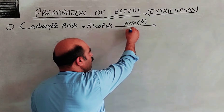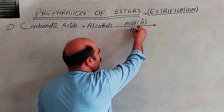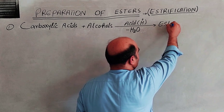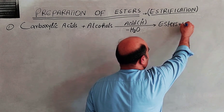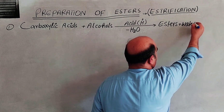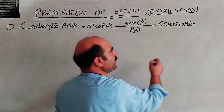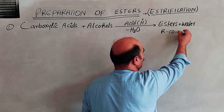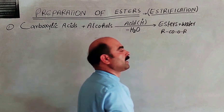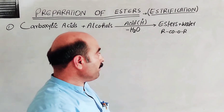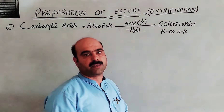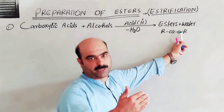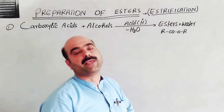The catalyst used is hydrogen ions, H+. Water is removed as a byproduct, H2O. The products are esters plus water. This means that in carboxylic acid, the OH group is replaced by the alkoxy group in the product ester.